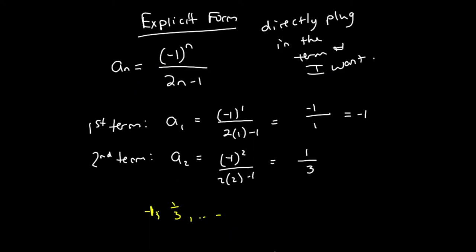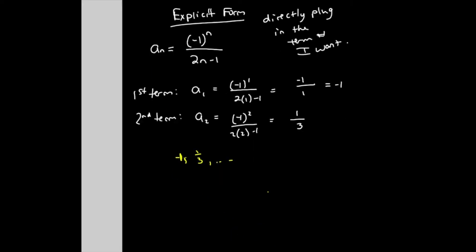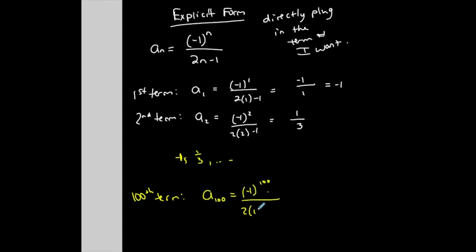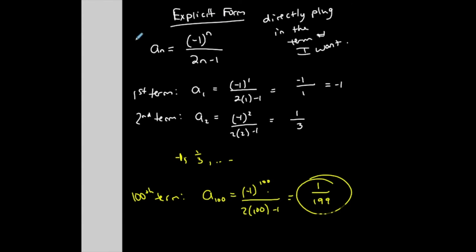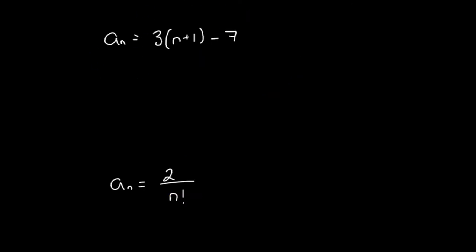If I want the hundredth term, all I have to do is replace n with 100. Everywhere I see an n, replace it with 100. So I have positive one over 200 minus one, which is one over 199. So the 100th term is one over 199. But this is only one representation of a formula that represents a sequence.